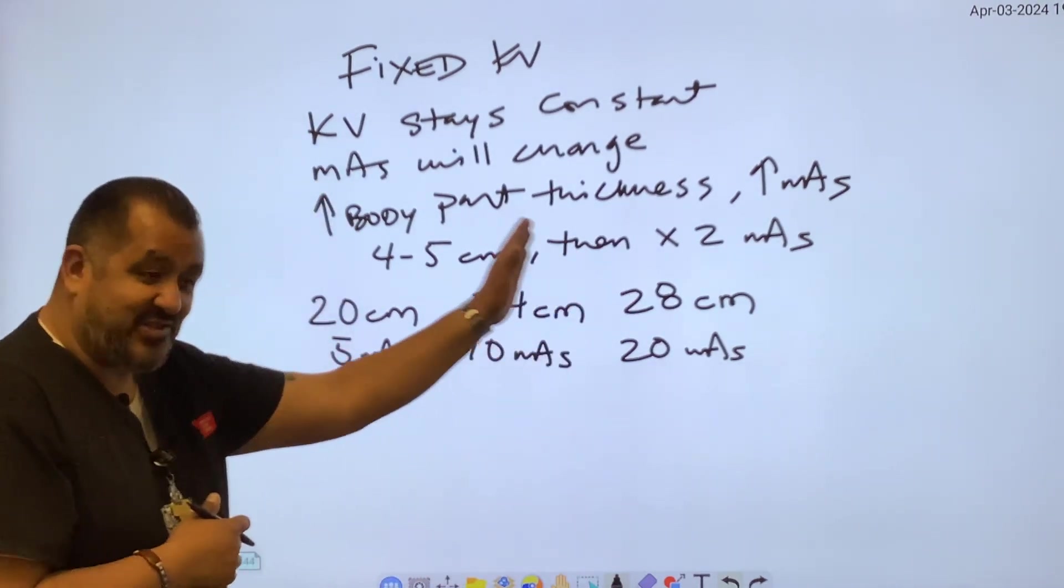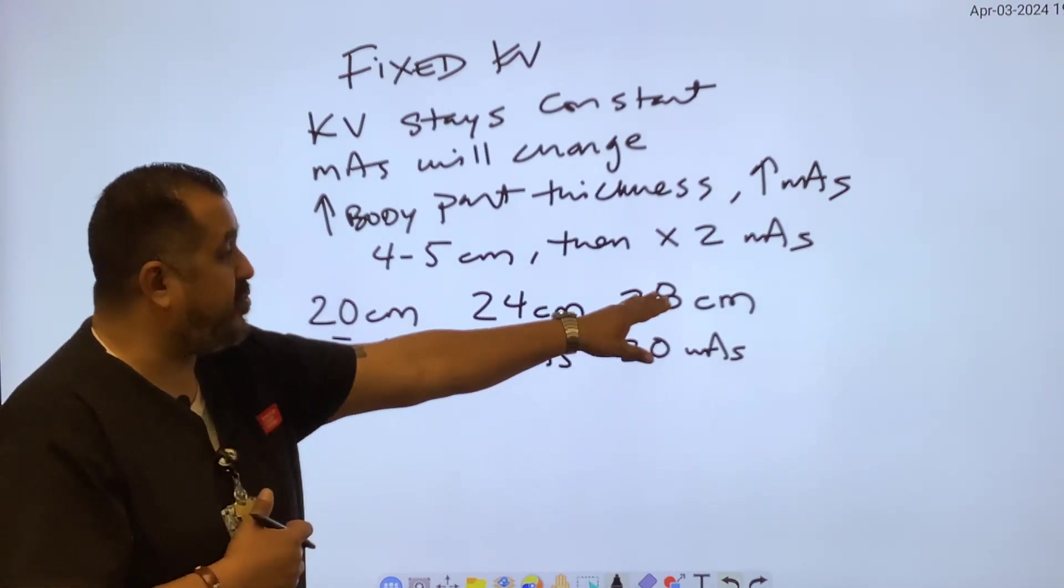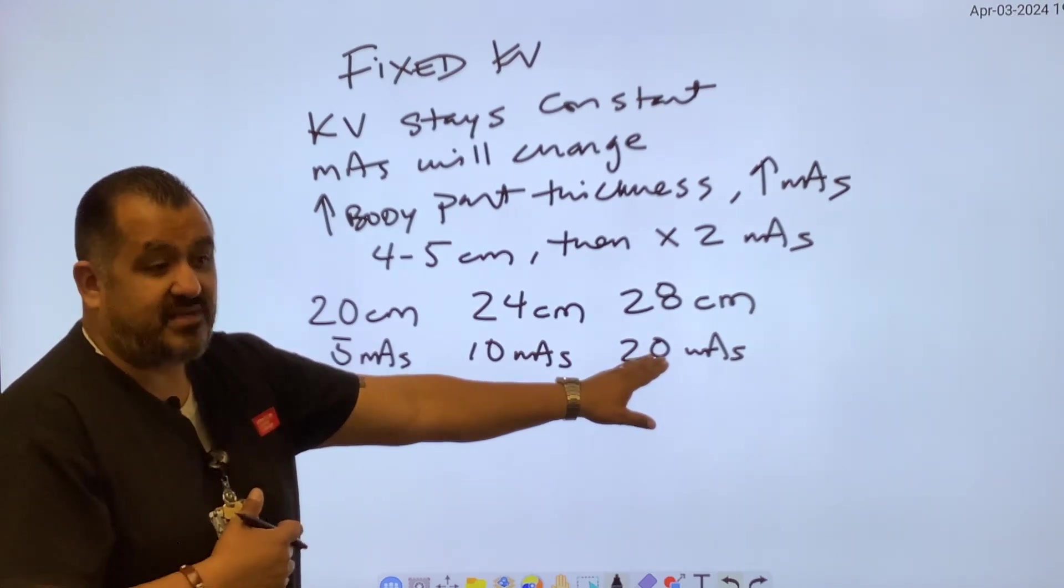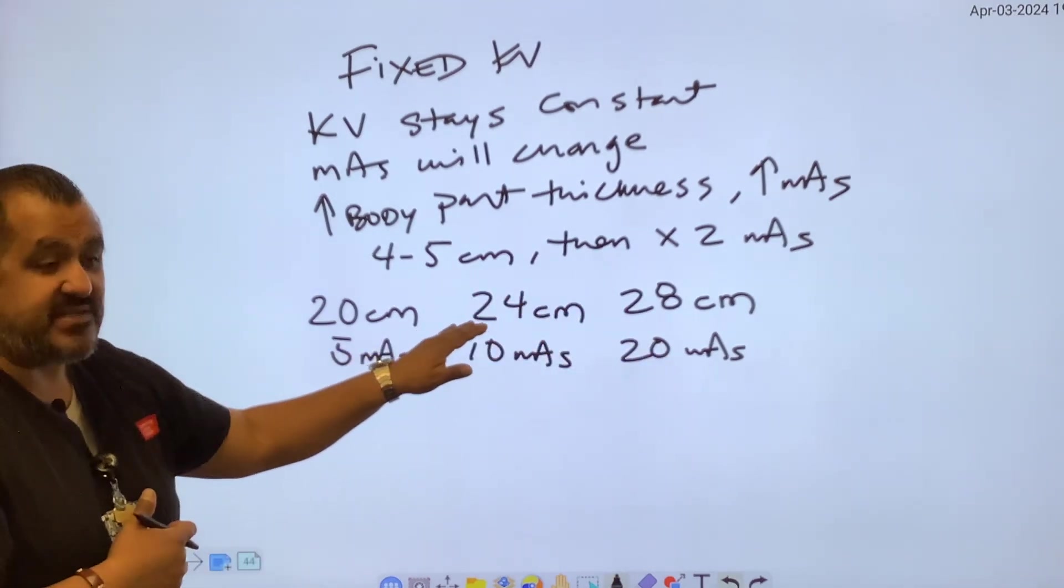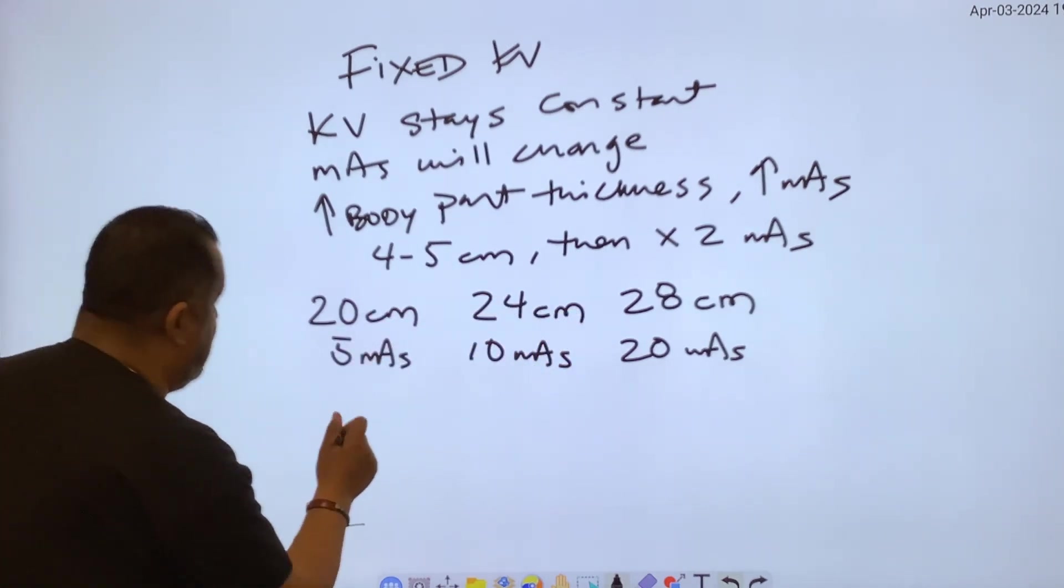The opposite is also true. And I put these numbers here on purpose because look, if you're at 28 centimeters using 20 mAs and now the body part thickness is decreasing, you're going to divide. I'm going to write this out on the board too.